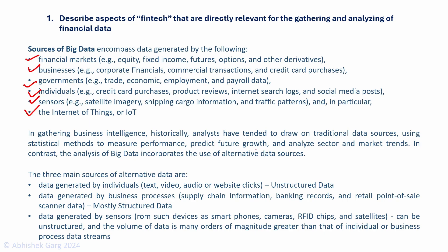In gathering business intelligence, analysts in the past depended only on traditional data sources using statistical methods to measure performance and predict future growth. But the analysis of big data incorporates the use of alternative data sources. There are three main sources of alternative data: data generated by individuals — text, videos, audio or website clicks, which is unstructured data; data generated by business processes such as supply chain information, banking records and point-of-sale scanner data, which are structured data; and data generated by sensors such as smartphones, cameras, RFID chips and satellites, which can be unstructured and is far greater in volume.